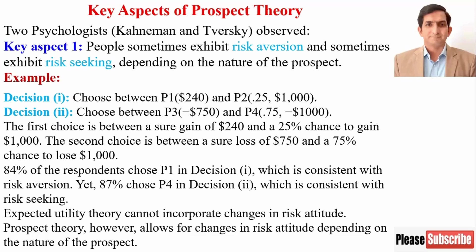If you are asked to choose between $240 for sure and a 25% probability of getting $1,000, people choose $240 for sure. This is consistent with risk-aversion because people prefer certainty over uncertainty. Now the other way around: if I ask you to choose between a $750 loss for sure and a 75% probability of losing $1,000, people want to play. This is consistent with risk-seeking because in a loss perspective, people want to take risk.